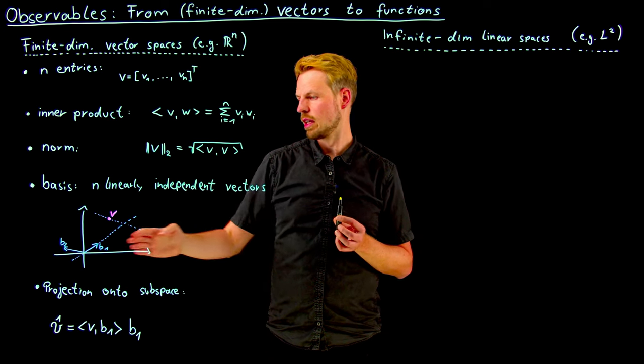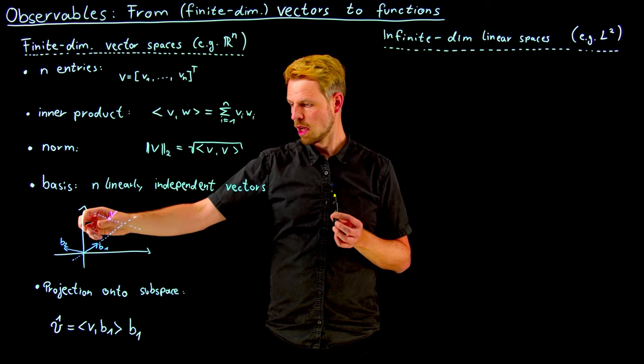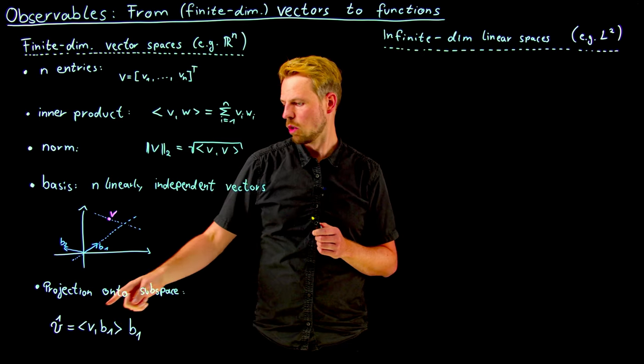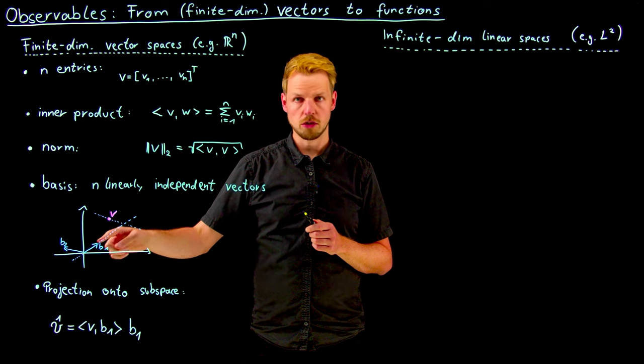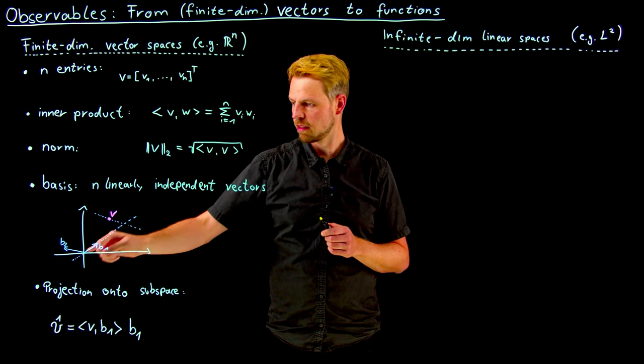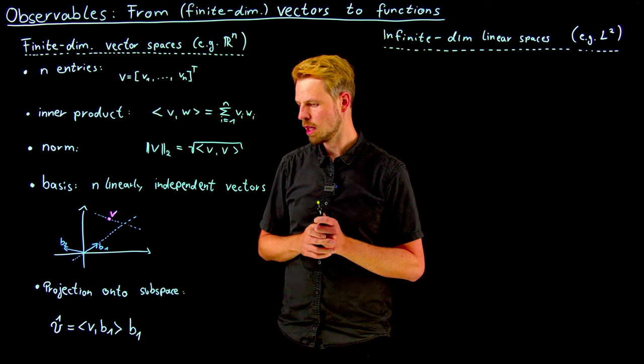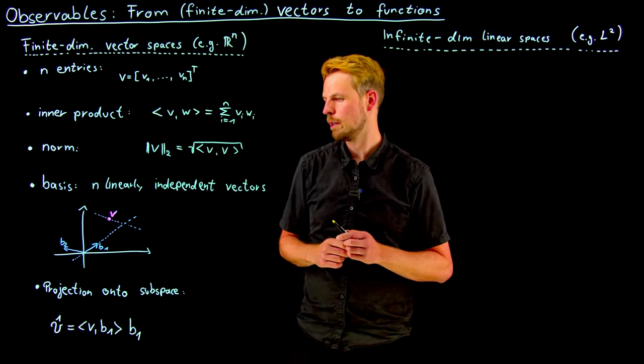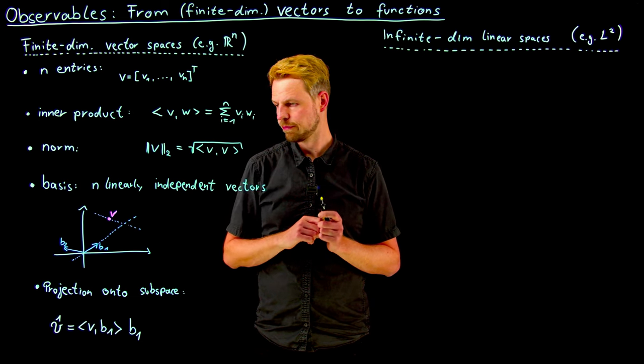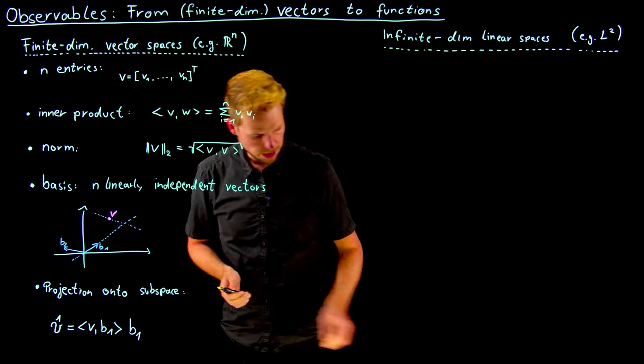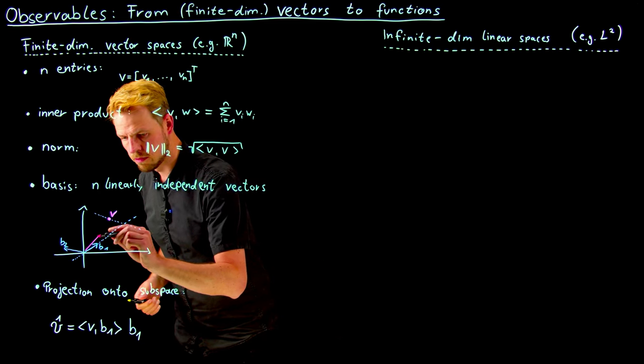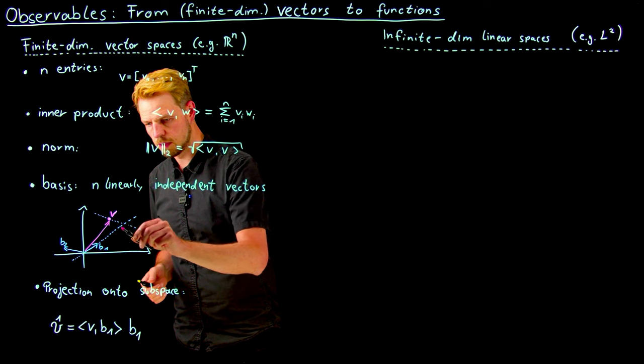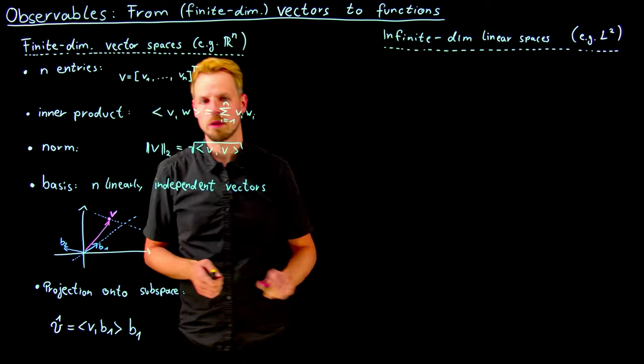In a projection step, we only consider the part of v that is described or contained in the subspace defined by b1. This inner product is the projection of the value onto the space. If you take vector v, the projection is the part expressed by the b1 direction.